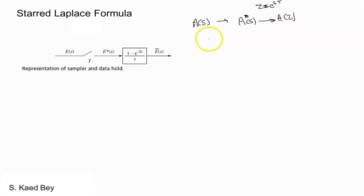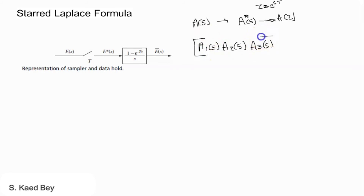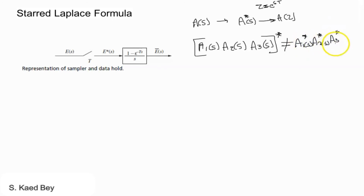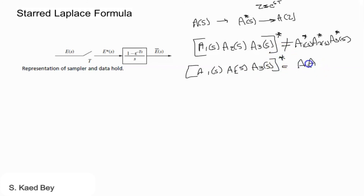For that reason, let's review some of the rules when we apply the starred Laplace formula. For example, assume I have A1 of s times A2 of s times A3 of s. If I star all of them together, this is NOT equal to A1-star times A2-star times A3-star. Be careful — because these are in the continuous time domain, if we star the entire product, the answer will be [A1·A2·A3]-star of s.